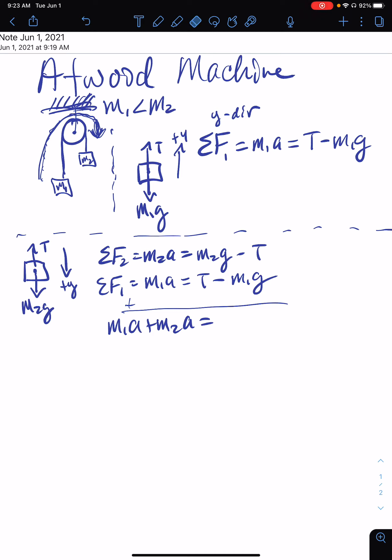So on the left-hand side I'm going to get m1a plus m2a, and on the right-hand side the tensions will cancel out. The tension here and the tension there, they're going to cancel each other out, so you're going to be left with m2g minus m1g.